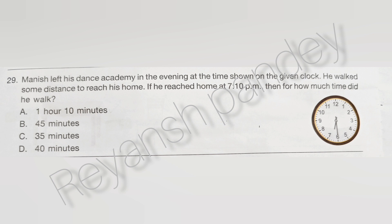Manisa left his dance academy in the evening at the time shown on the given clock. He walked some distance to reach home. He reached home at 7:10 pm. How much time did he walk? The answer is D — 40 minutes.